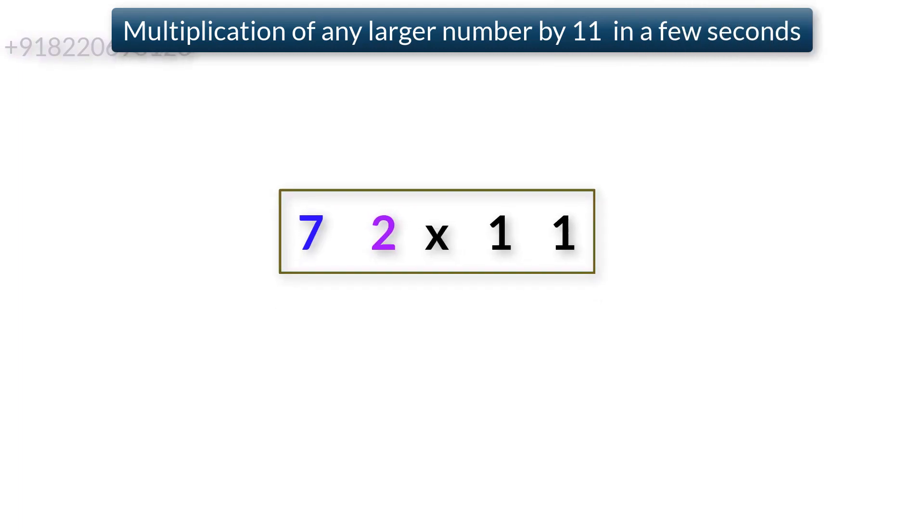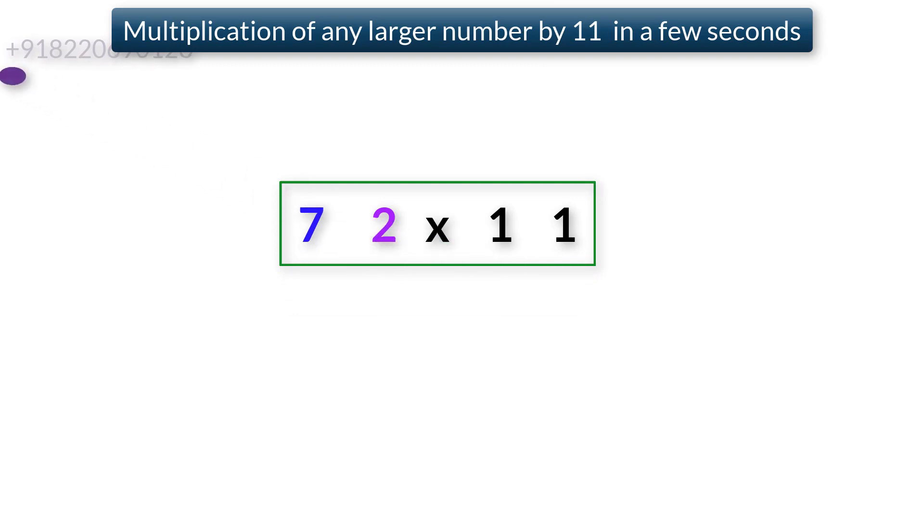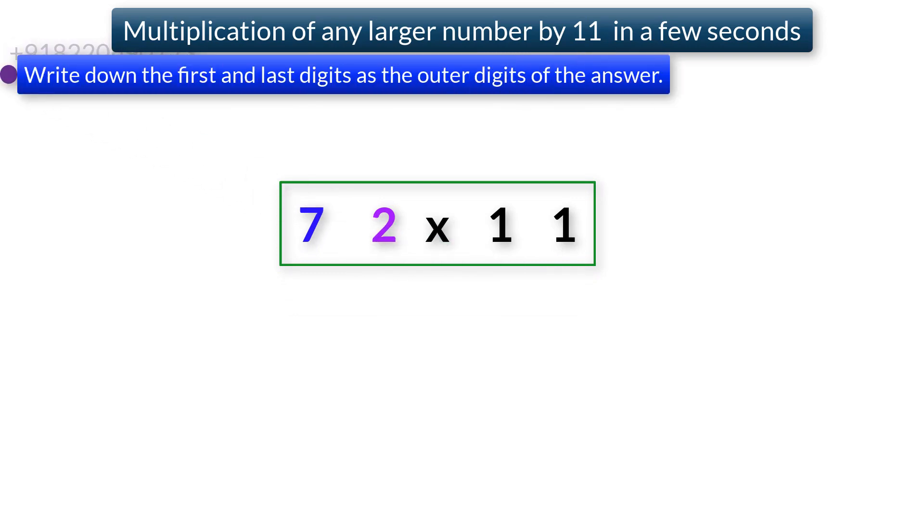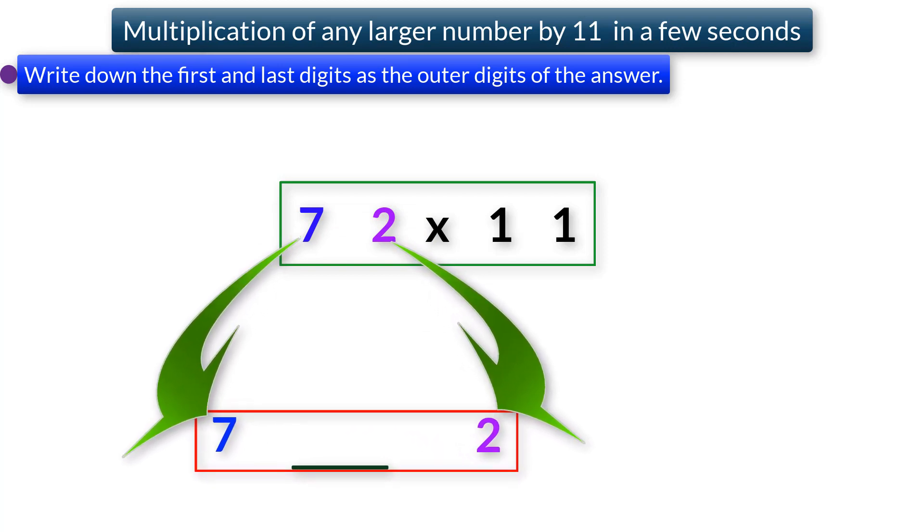Let us take a two-digit number. Step 1: Write down the first and last digits as the outer digits of the answer. So, write down the first digit and last digits 7 and 2 as the outer digits of the answer.